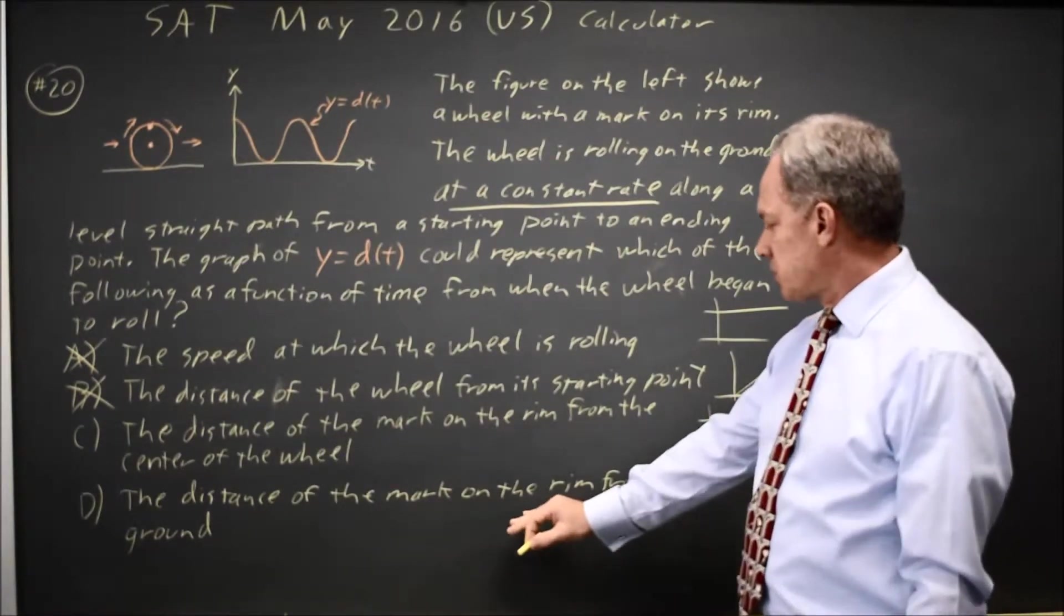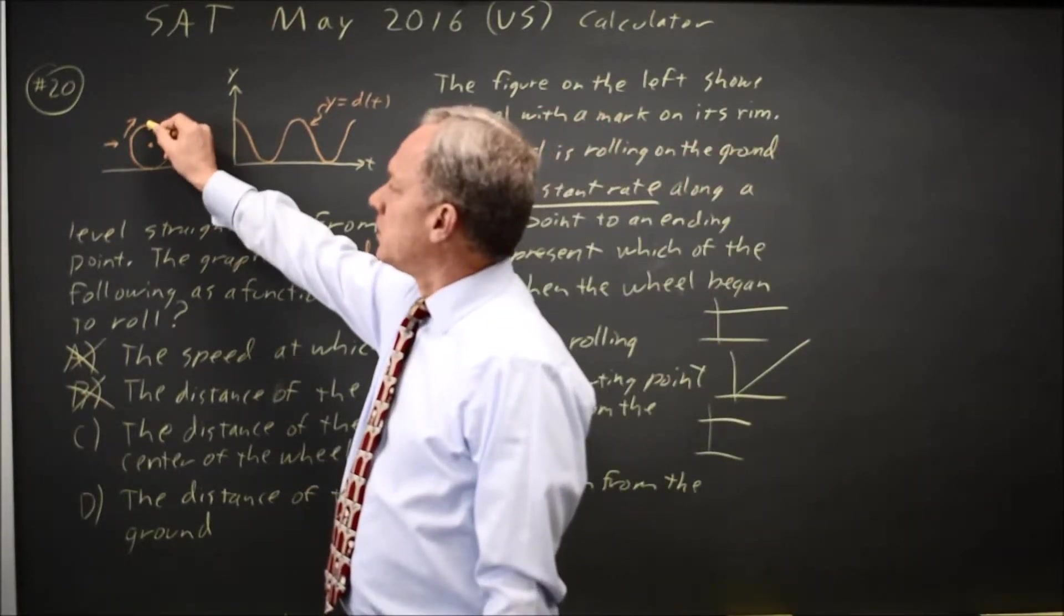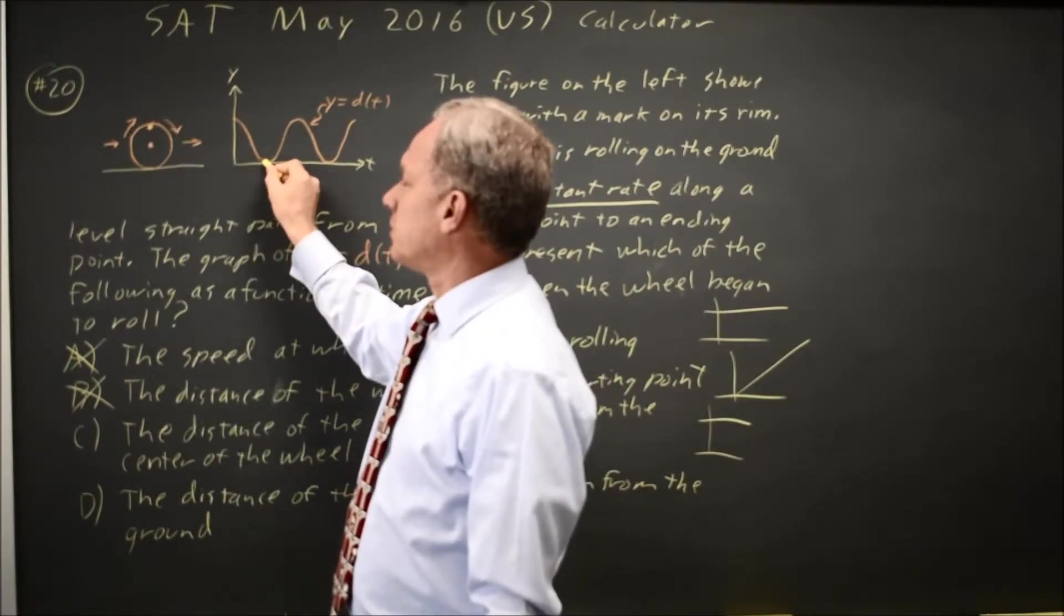And choice D, distance of the mark on the rim from the ground. If you visualize a wheel rolling, after it moves half the circumference, this mark will be touching the ground.